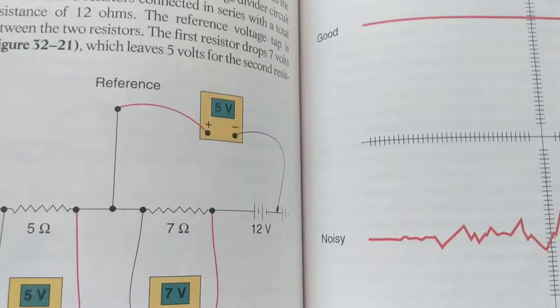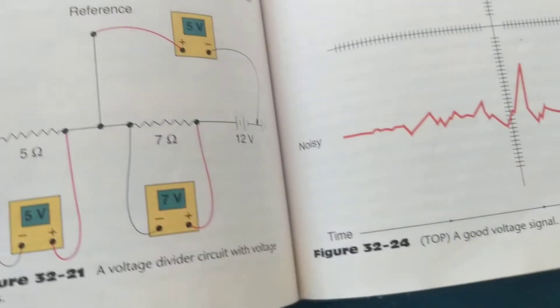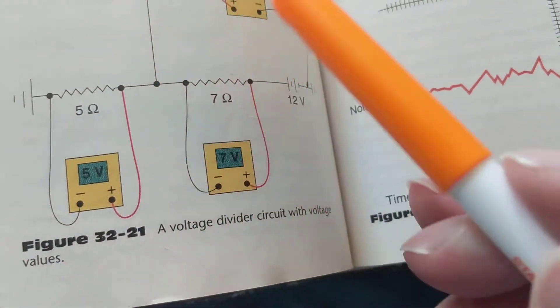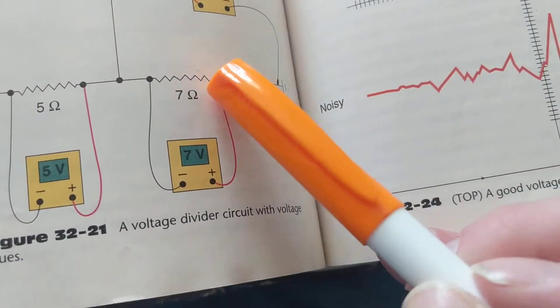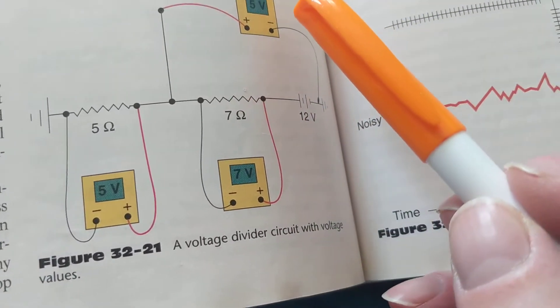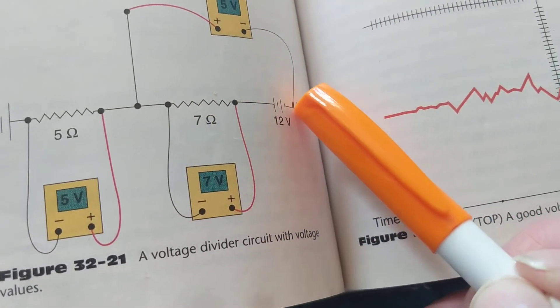We took the meter and we put it from here, same point, but we flipped the meter. Instead of going here to the positive, guess what we took it? We took it to the negative going to ground.